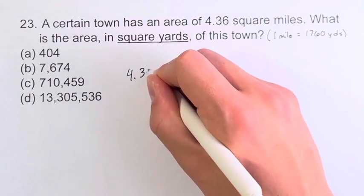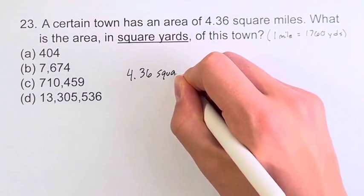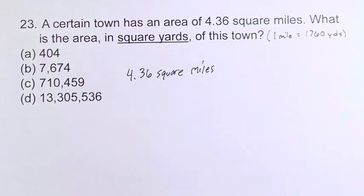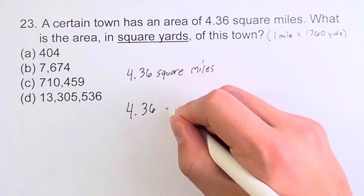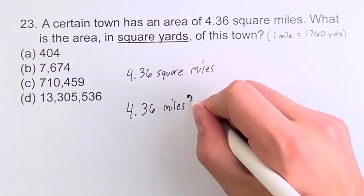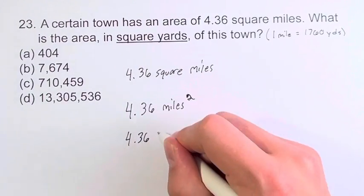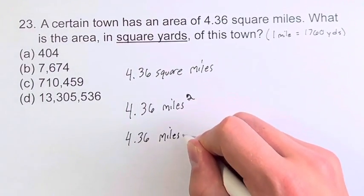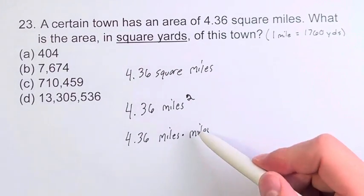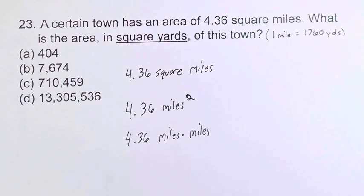So we have 4.36 square miles. And for unit conversion, it's helpful to write this as 4.36 miles squared, or 4.36 miles times miles. Writing it this way might seem a little confusing, but this is just an area. And we're going to do a unit conversion by using the fact that one mile is equal to 1760 yards.